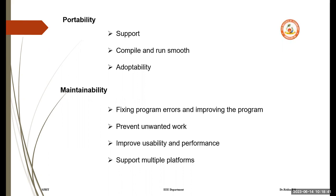Next, maintainability. It is the process of fixing program errors and improving the program. If your program is easy to read and understand, then its maintenance will be easier. It should also prevent unwanted work so that the maintenance cost in the future will be very low. It should have the quality to easily meet new requirements. A maintainable software allows us to fix bugs quickly and easily, improve usability and performance, add new features, and make changes to support multiple platforms. That is why the program should be easily readable and understandable.